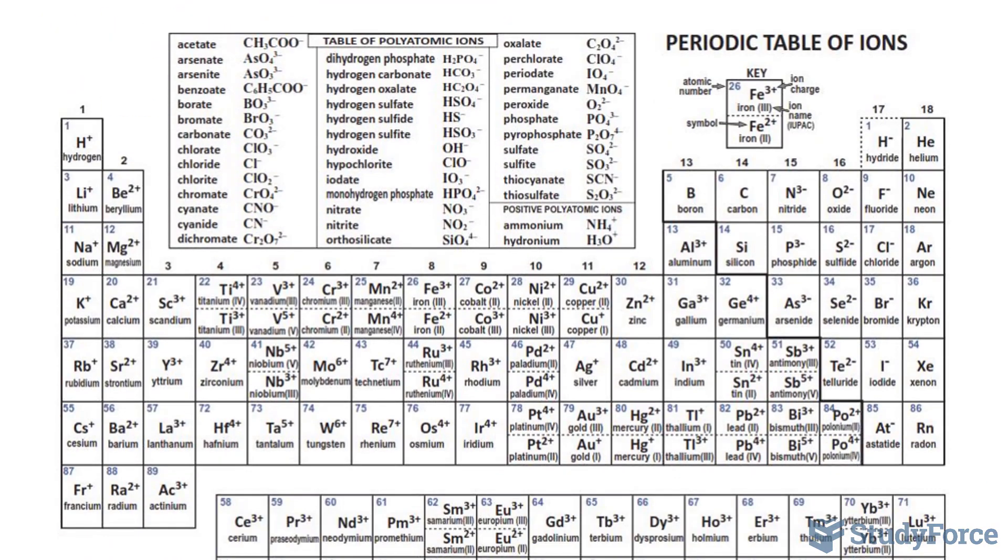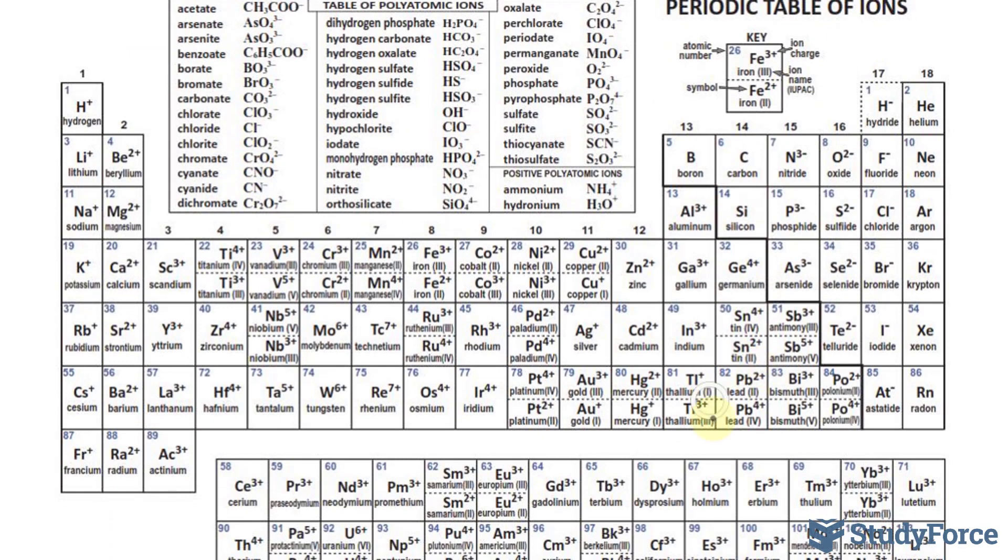If you take a look at the periodic table, Pb is right here. And if you're curious, the reason why they use Pb is because that's Latin for lead. Pb stands for plumbum. We have to decide whether it's a charge of 2 or whether it's a charge of 4. And here's how we find out.